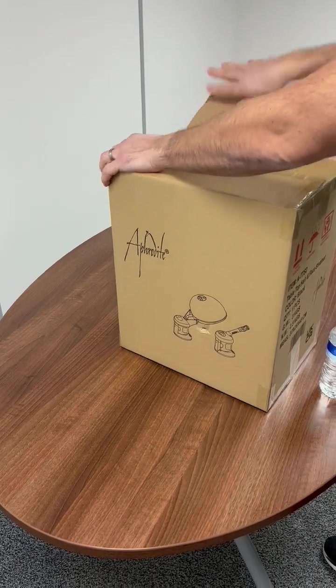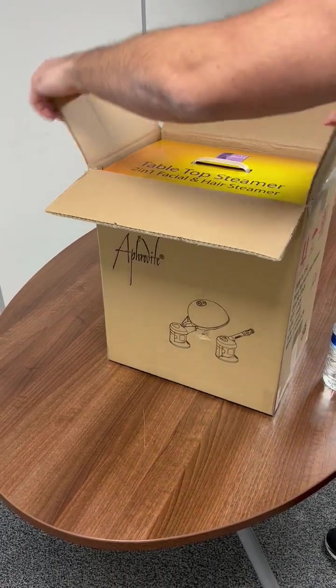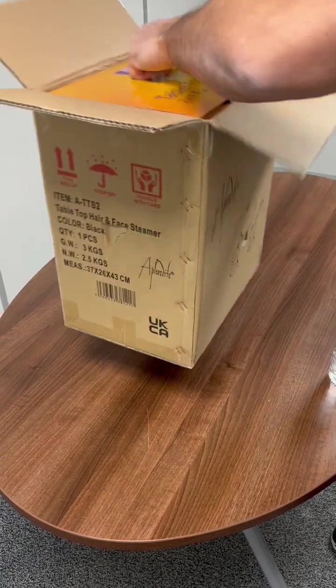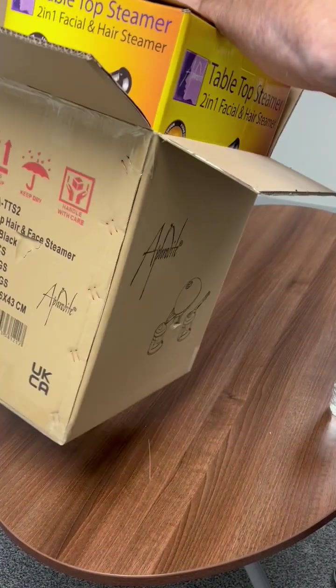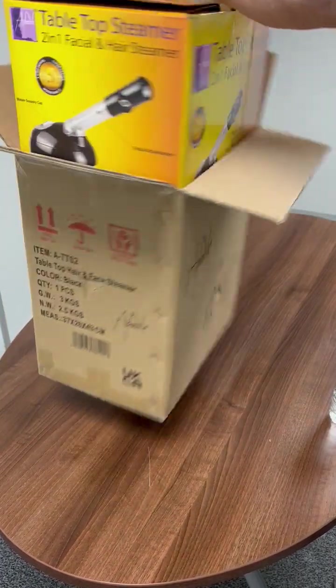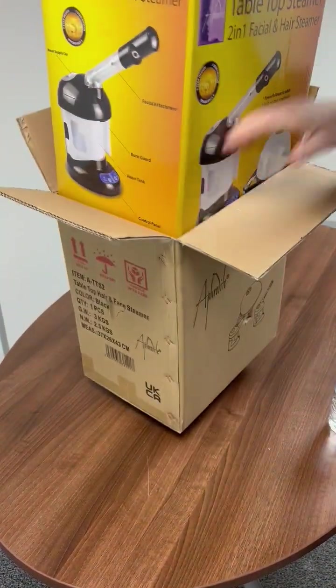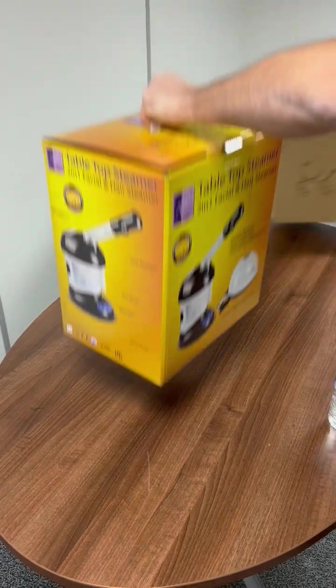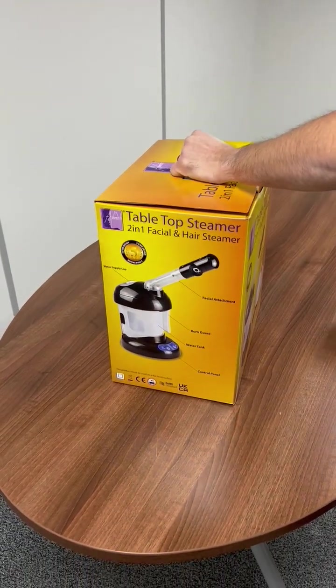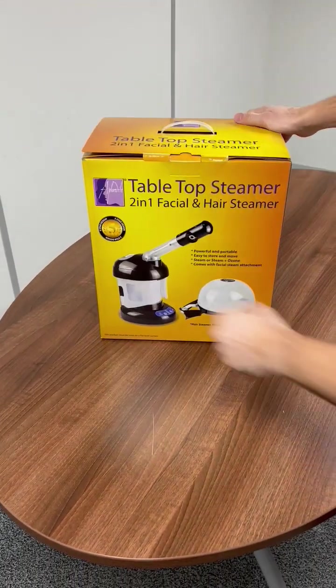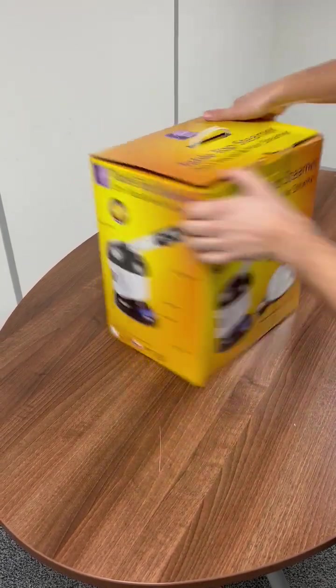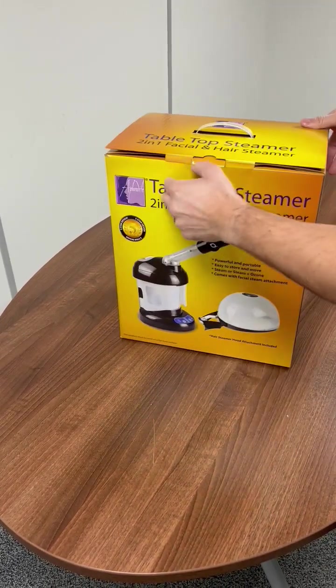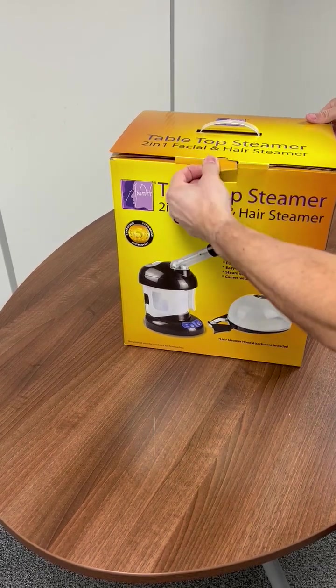First of all, we need to get it out of the box. It comes with a nice little handle, so I just slide it out gently. Now this is the box it comes in. As you can see, it's got the facial part and the hood part, very easy to remove from the box. Pull it out.